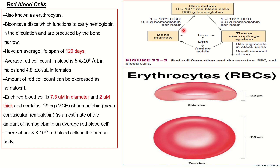They have an average hemoglobin content of 29 picograms, and in circulation there are around 3 times 10 to the power of 18 red blood cells for every 900 grams of hemoglobin. They have an average lifespan of 120 days, after which they are broken down by tissue macrophages — either into bile pigments excreted in stool, or re-uptaken into iron and amino acids which are recycled into new red blood cells.